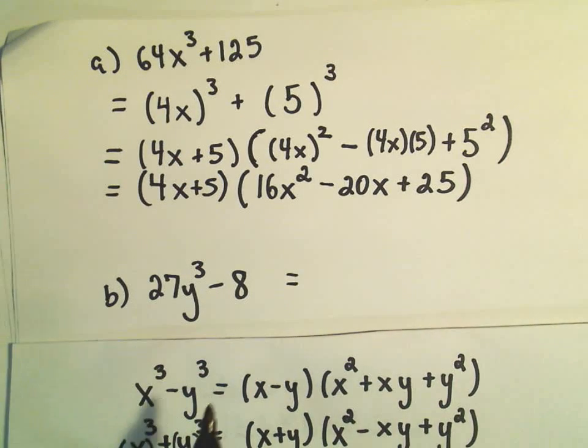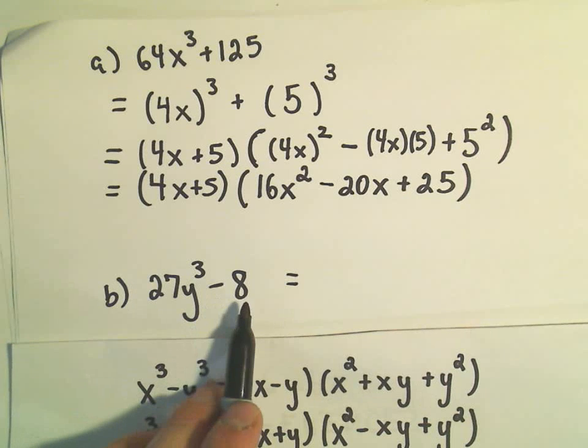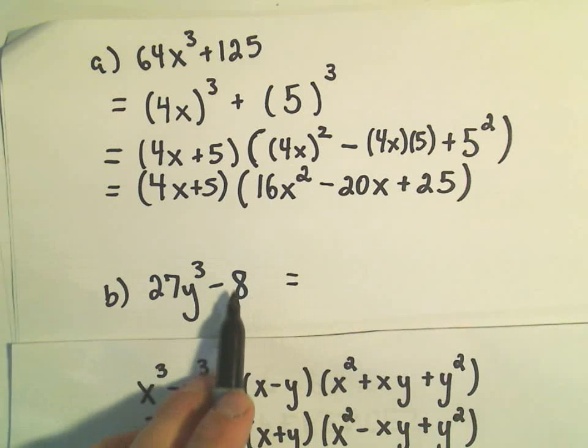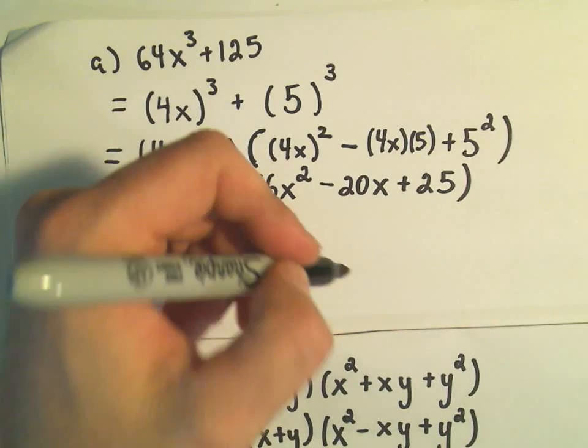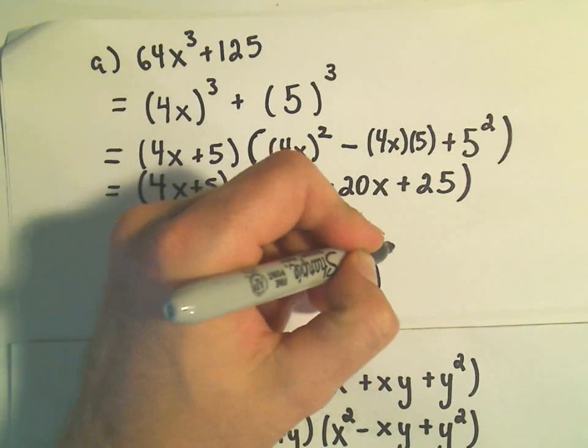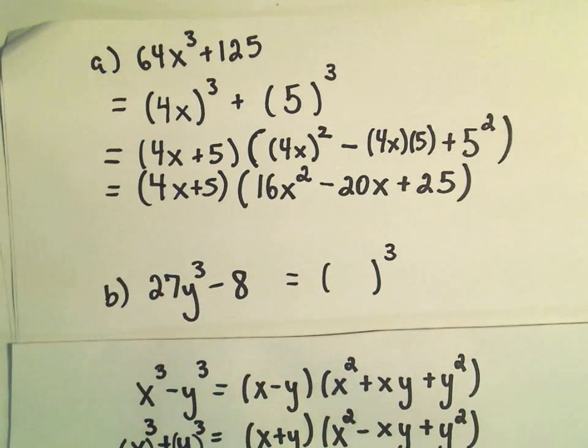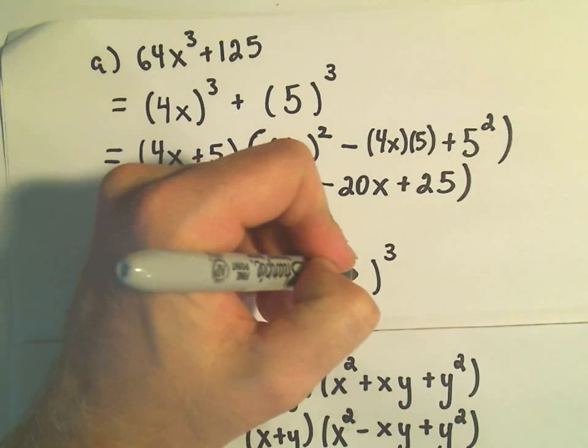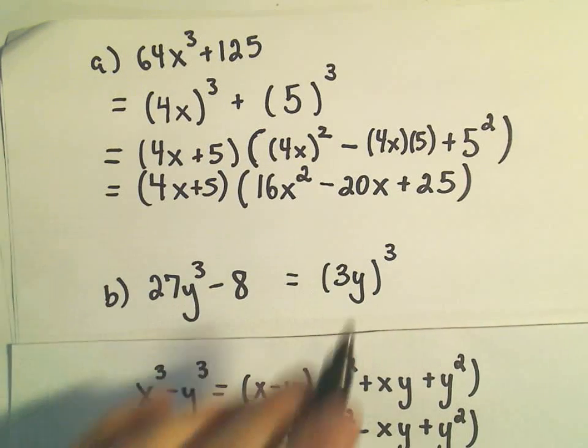One more here. I'm going to do the same thing. I have something cubed minus something. So the trick is we have to, again, kind of rewrite them both. So what number cubed would give me 27? There we would just need a 3. And to get the y³, we would need a y in the parentheses.